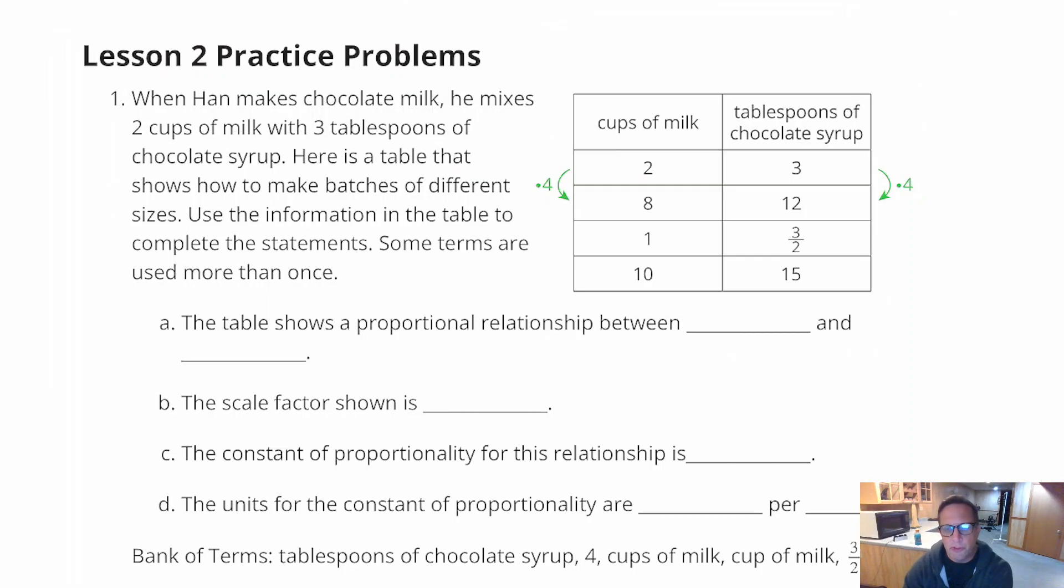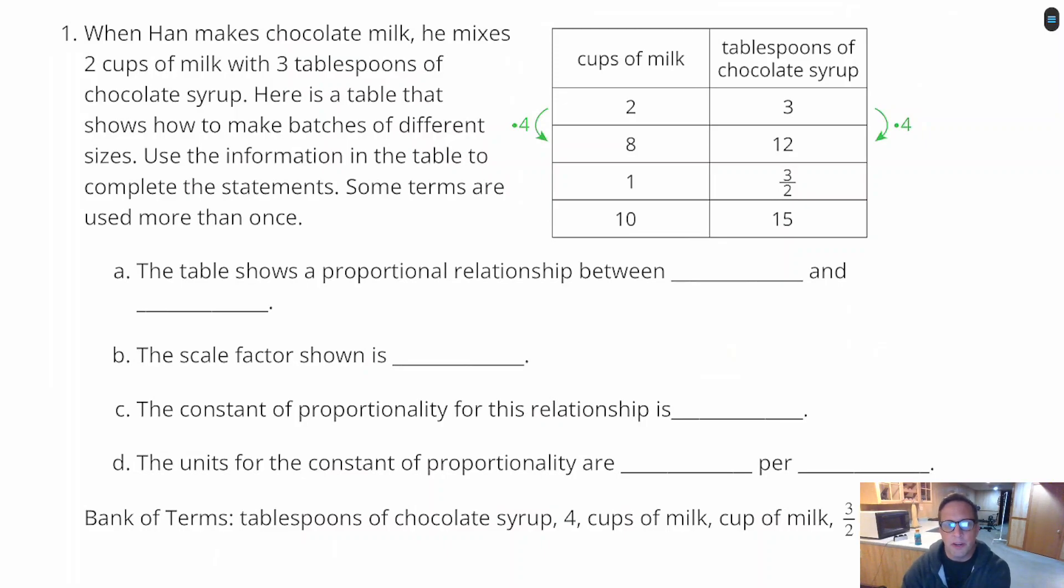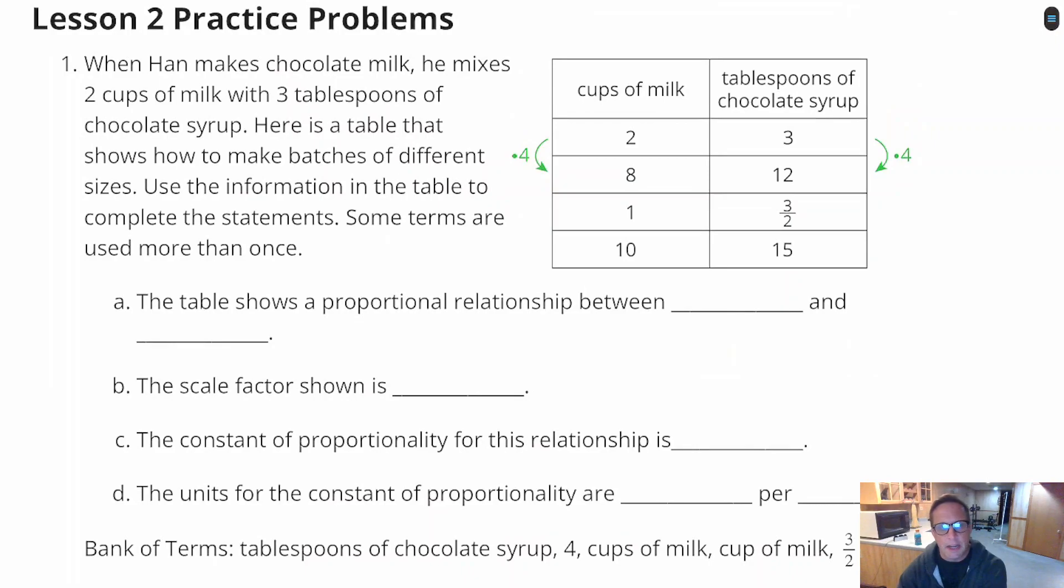Let's go through these series of questions. The first question is, the table shows a proportional relationship between blank and blank. I'm just going to abbreviate this. It looks like cups of milk, I'm just going to put milk there, and syrup.